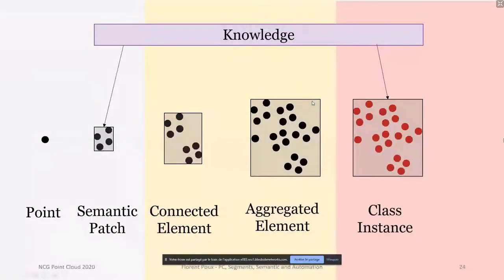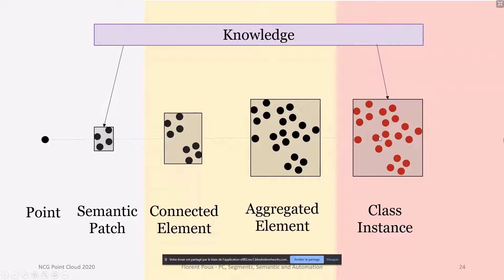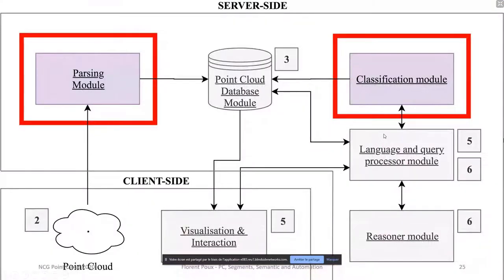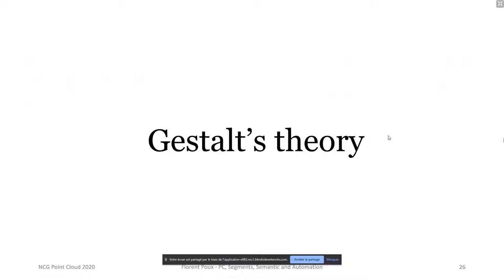What is really nice in this architecture is a bijective communication between different levels of detail or generalization. One point is the smallest entity; several points constitute a semantic patch; several semantic patches constitute a connected element — say, the seat of a chair; and several connected elements constitute an aggregated element. So the seat, legs, and backrest together constitute the aggregated element called a chair through class instancing.